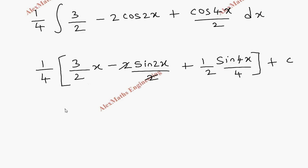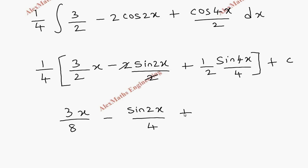We cancel common factors. Multiplying 1/4 inside gives: 3x/8, then minus sin2x / 4, then plus sin4x / 32, plus C. If preferred, we can keep 1/4 outside or multiply it through like this.